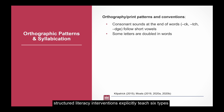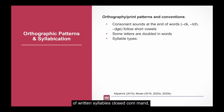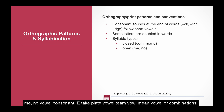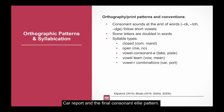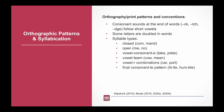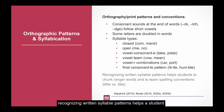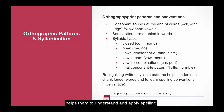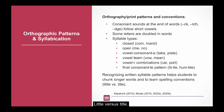Structured literacy interventions explicitly teach six types of written syllables: closed (calm, manned), open (me, no), vowel-consonant-E (take, plate), vowel team (vow, mean), vowel-R combinations (car, port), and the final consonant-LE pattern (little, humble). Recognizing written syllable patterns helps a student to divide longer words into readable chunks and helps them understand and apply spelling conventions, such as the doubling of consonant letters, as in 'little' versus 'title.'